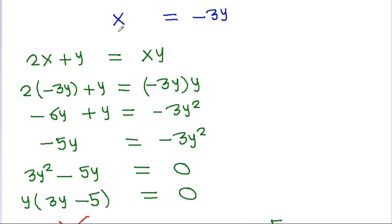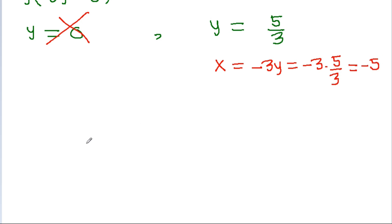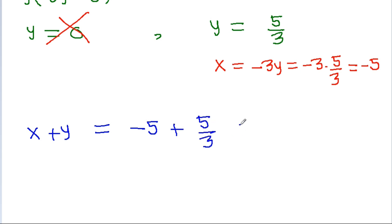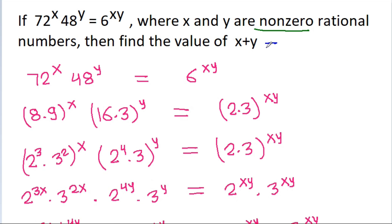We have x equals minus 3y, and y is 5 by 3, so x equals minus 3 times 5 by 3, giving x equals minus 5. Therefore, x plus y equals minus 5 plus 5 by 3, which equals minus 10 by 3. So x plus y is equal to minus 10 by 3.